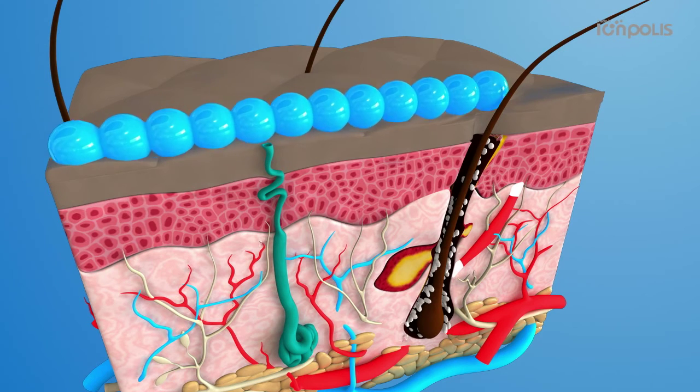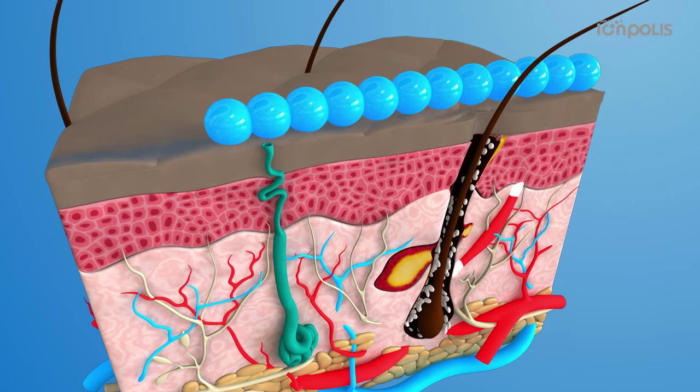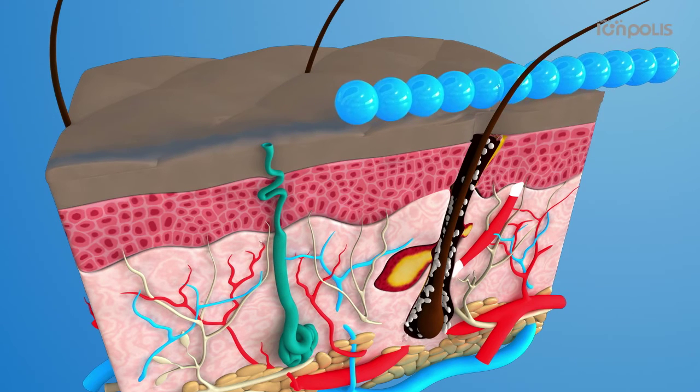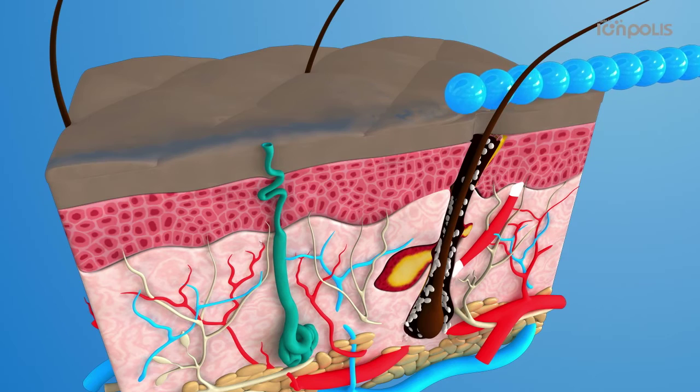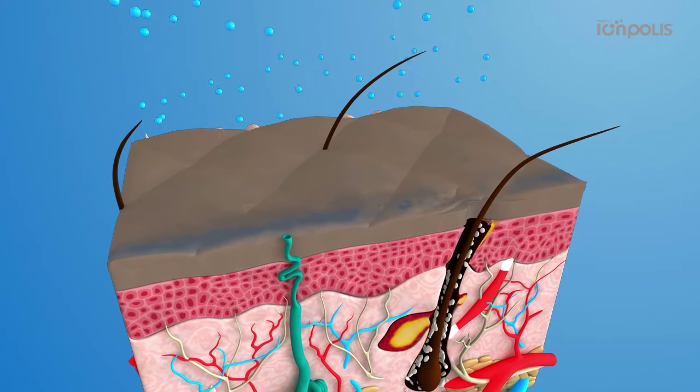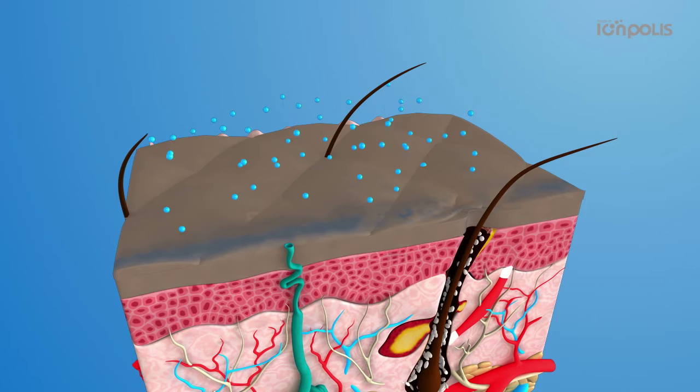Ionpolis S electrolyzes general water molecule clusters of 120 to 250 Hz to make clusters of 50 to 60 Hz. It penetrates into pores to sterilize bacteria that cause skin troubles and remove impurities.